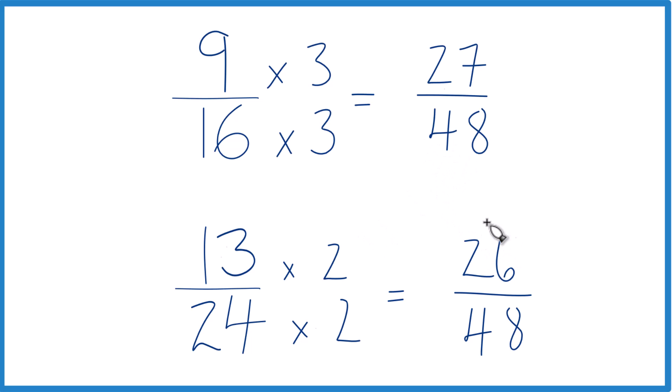But now, what I can do is I can compare the numerators for these two fractions, since their denominators are the same. And it looks like 27, that's larger than 26. So 27-48ths, that's larger than 26-48ths. Not by much, just by 1-48th. But this is still larger up here.